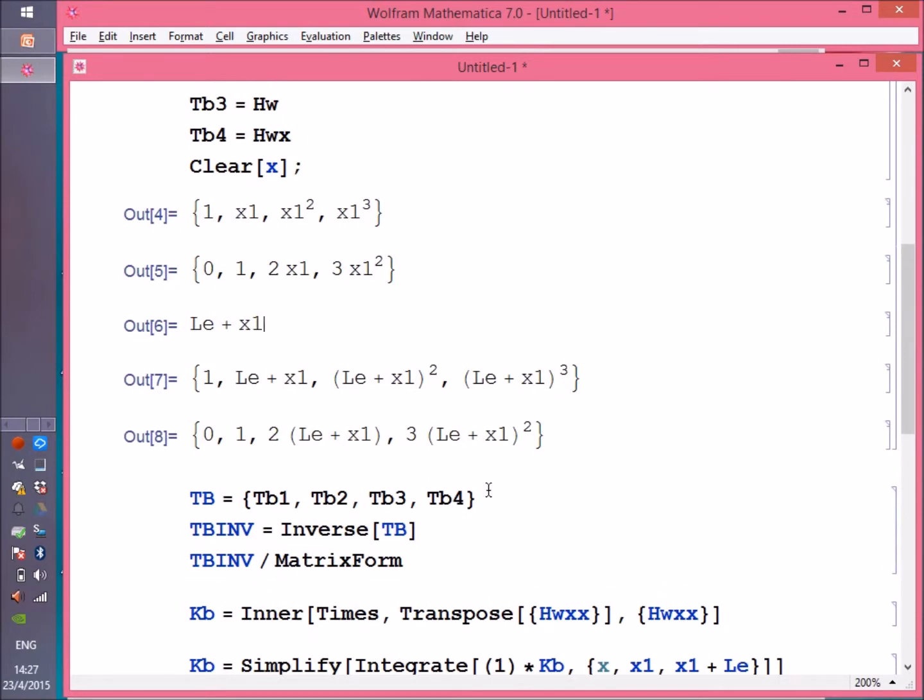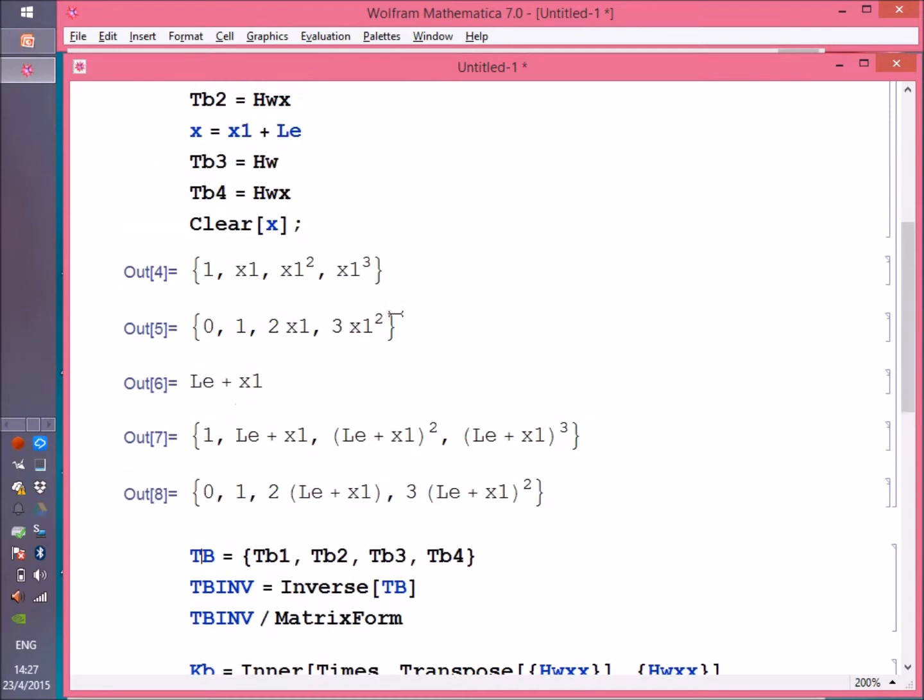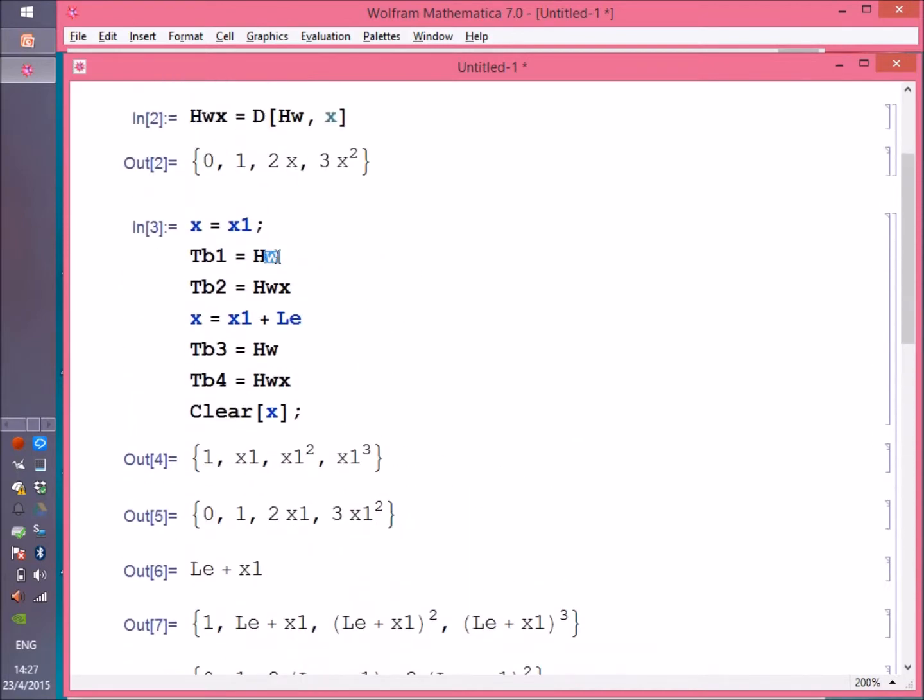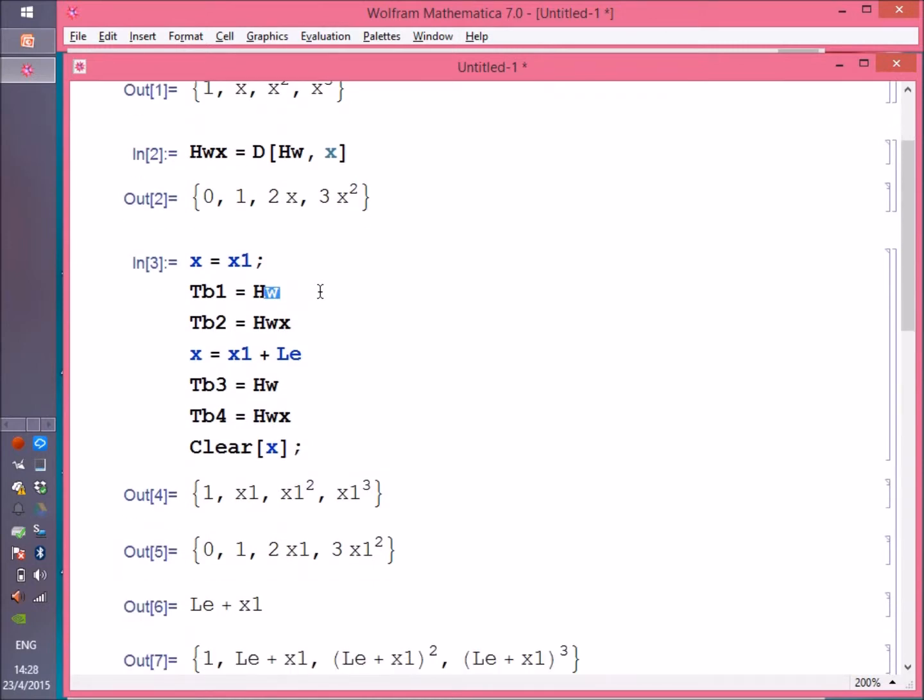So now I need to put the four row vectors in a single matrix. I'm going to define TB. Actually, just to be clear, W here stands for the lateral deflection. I use it as a subscript in many cases. And B stands for bending.